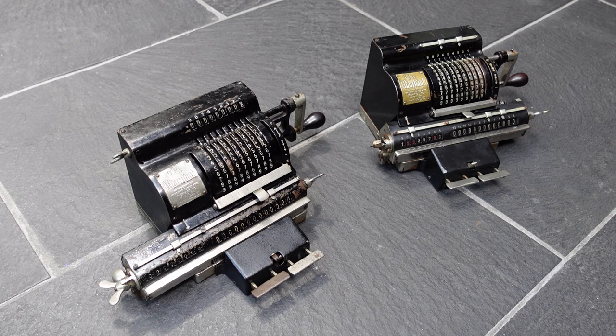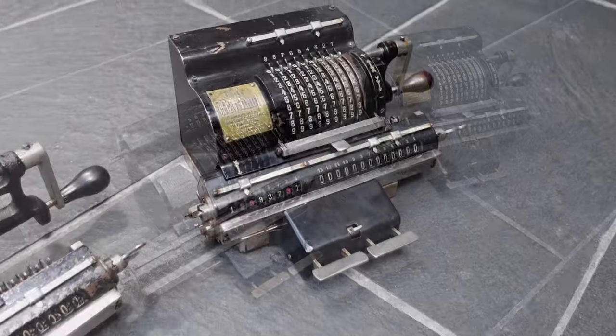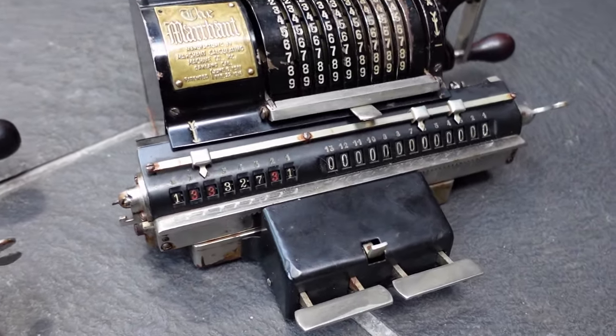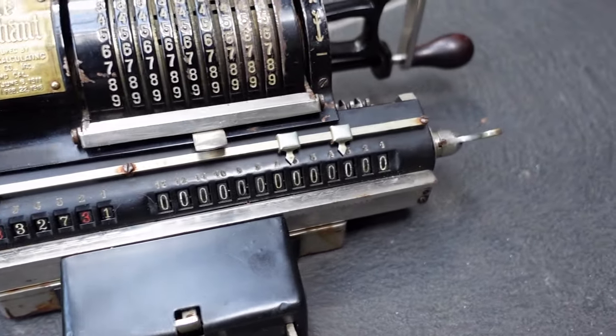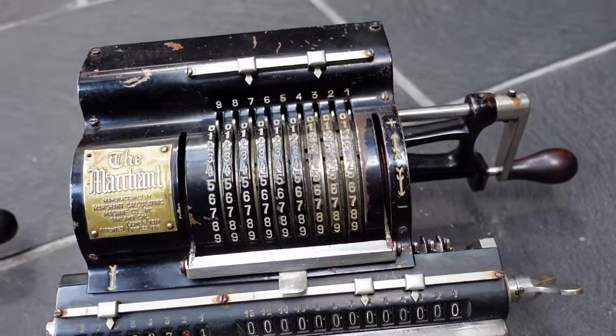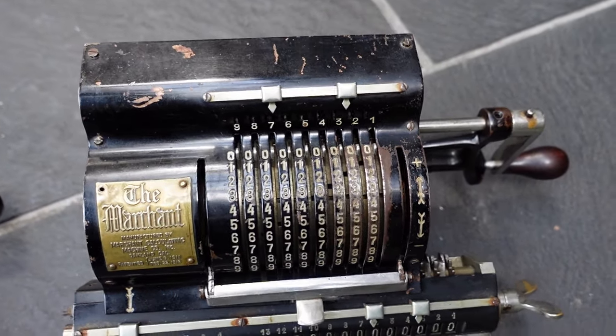These are two Marchant Pony machines. On the right is the Marchant Pony type A. The A designates the size of the output register.